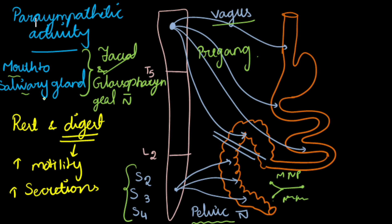Regarding parasympathetic activity: it mainly helps in rest and digest. For digestion it increases motility and increases secretions. This is all regarding the enteric nervous system. If you have any suggestions regarding topics to be discussed, just comment below. Thank you so much and happy learning.